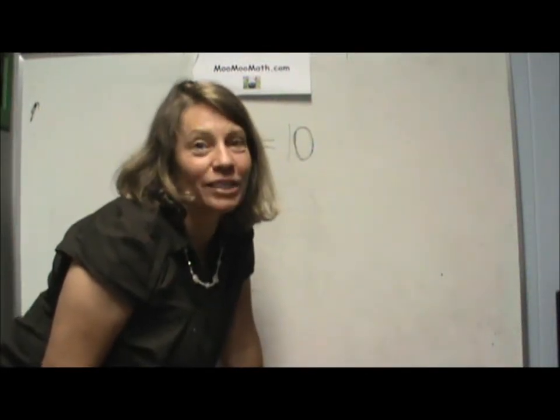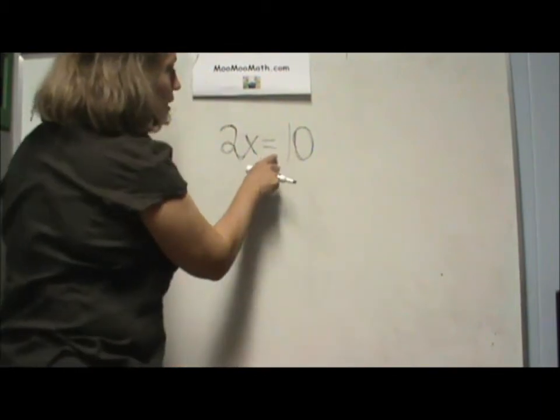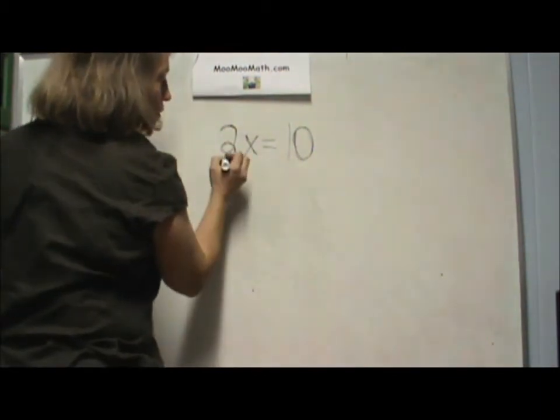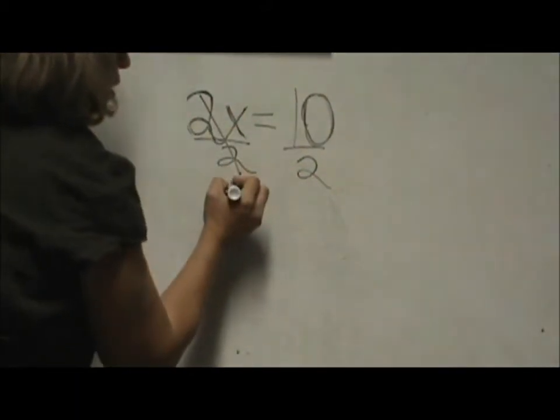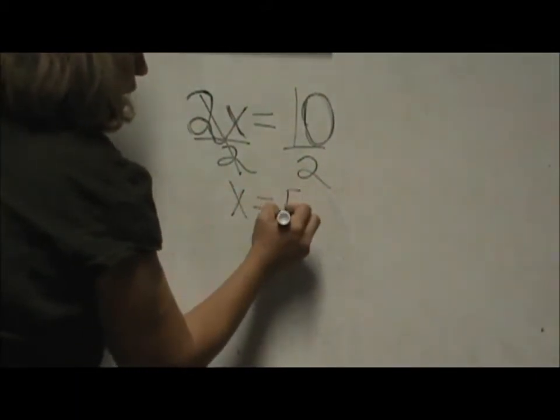Hi, today we are going to look at how to solve a one-step equation. We have 2x equals 10. To solve this, divide both sides by 2, so x equals 5.